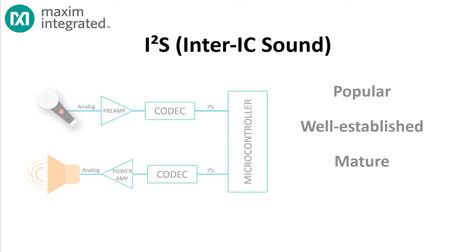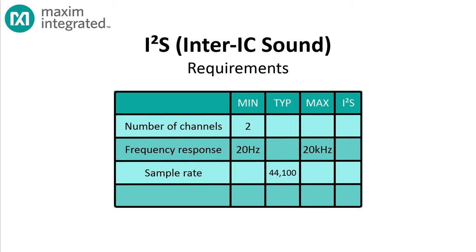For most consumer audio uses, stereo sound is a given, and for that you need two channels — left and right — and a frequency response that's linear and flat from about 20 Hz to 20 kHz. To get to 20 kHz, Nyquist tells us that we need to sample at some rate greater than twice the highest frequency. That's why digital compact discs set a 44,100 samples per second standard, and DVDs use 48,000 samples per second.